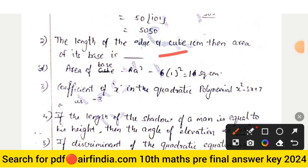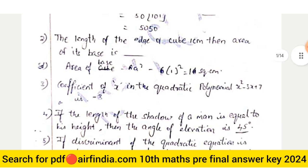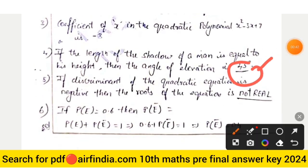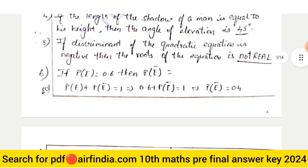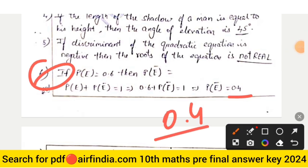The second answer is base — area of base is 1 square centimeter. The third answer: coefficient of x is minus 3. The fourth answer is 45 degrees. The fifth answer is 'not real'. The sixth question answer is 0.4.